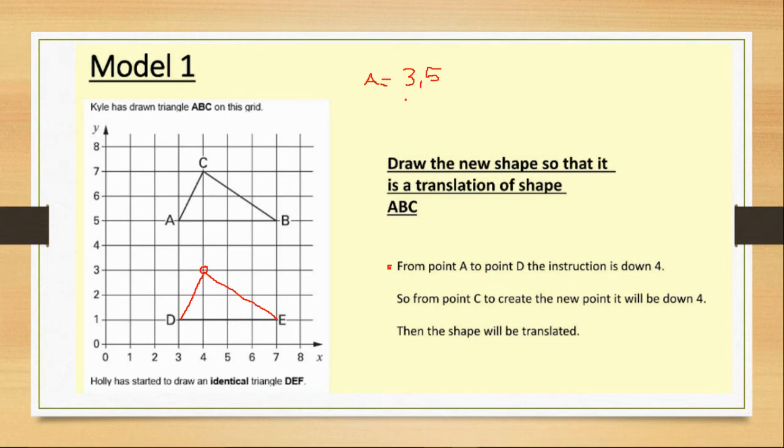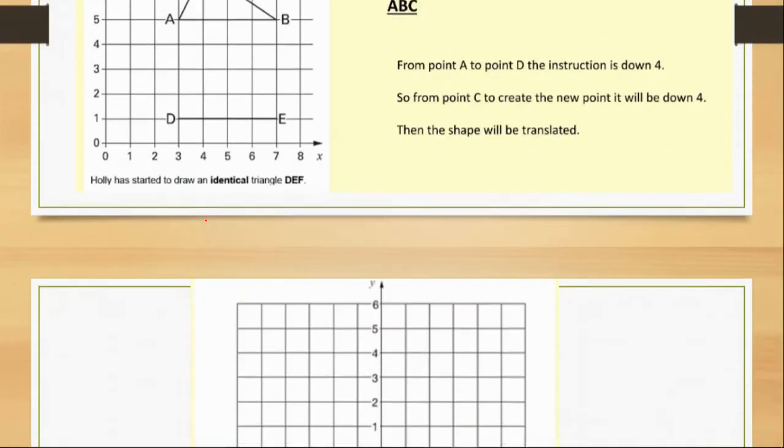And it may say, draw your new triangle, starting at point D, with the coordinates 3, 1. And then you will just draw the same triangle, making sure that A and D are the same corners. And draw it like that. And then the shape will be translated.